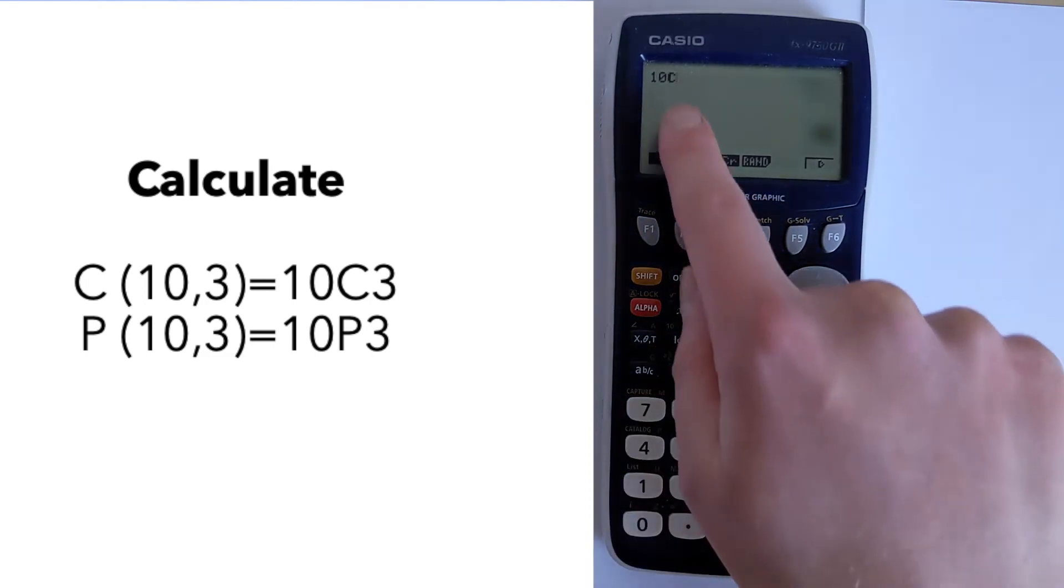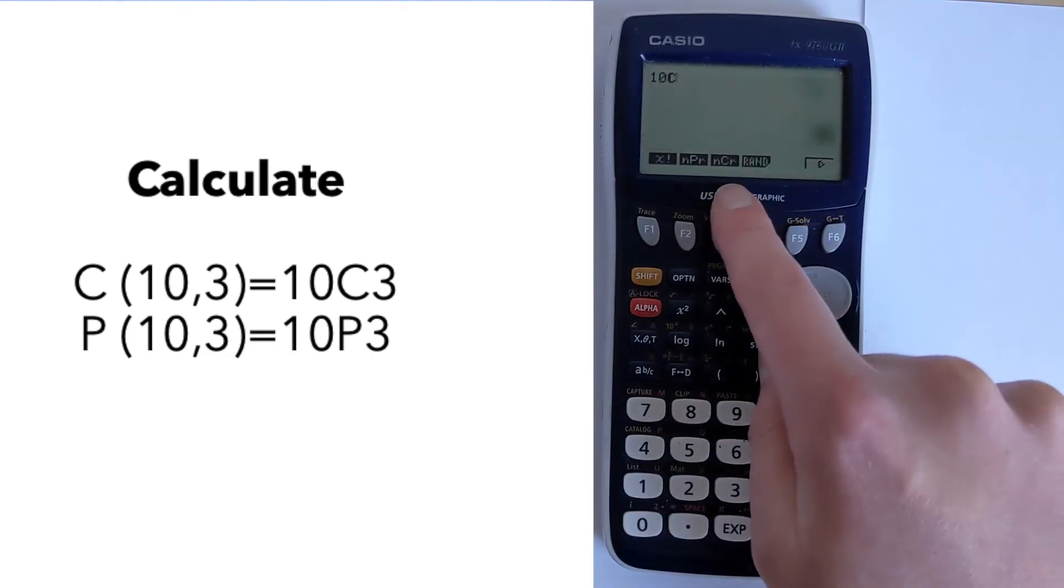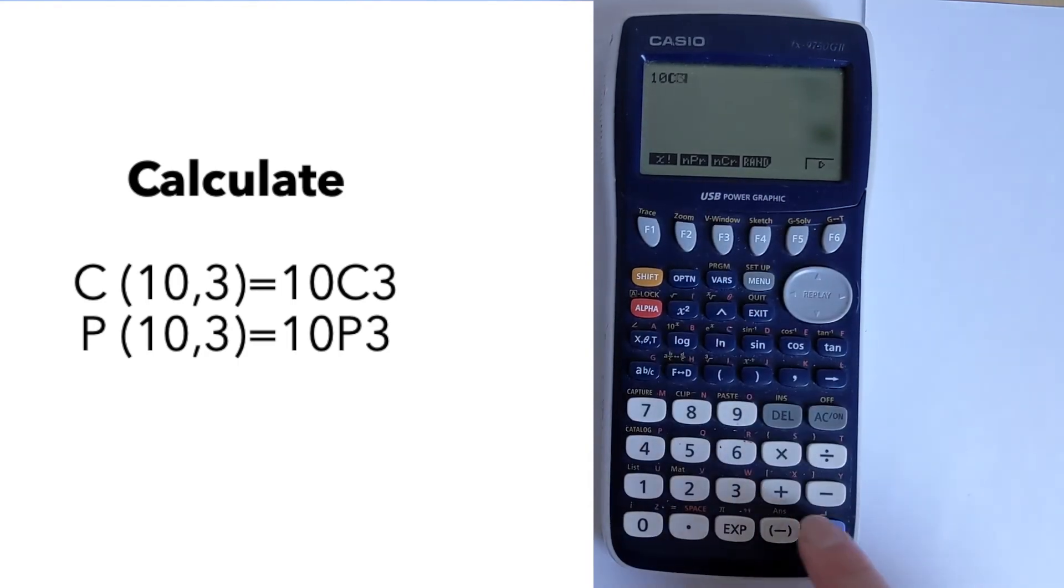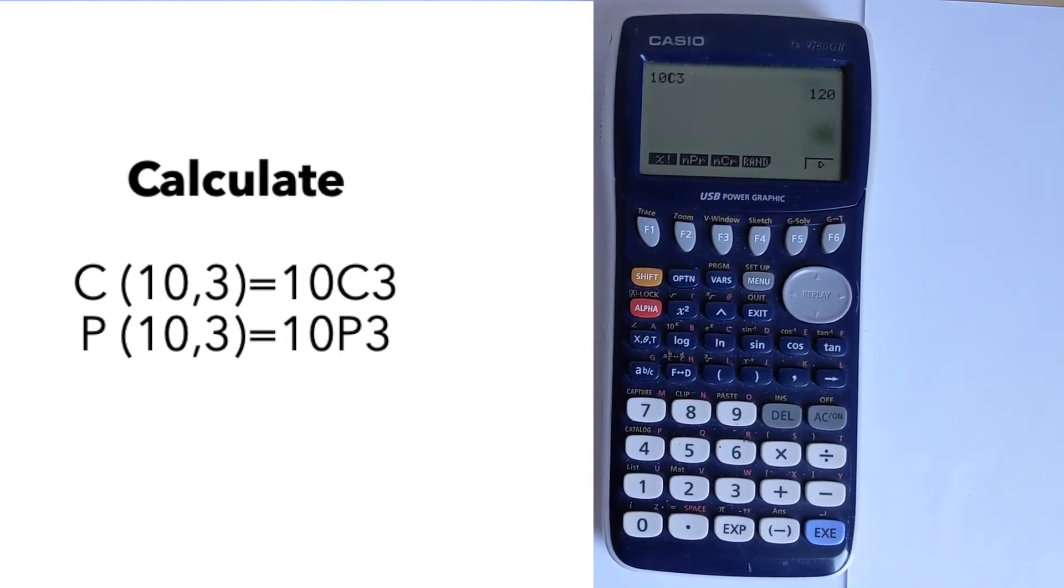Then we have combination, or 10 choose, and then we've got R is 3, and we can evaluate that, and it gives you the answer.